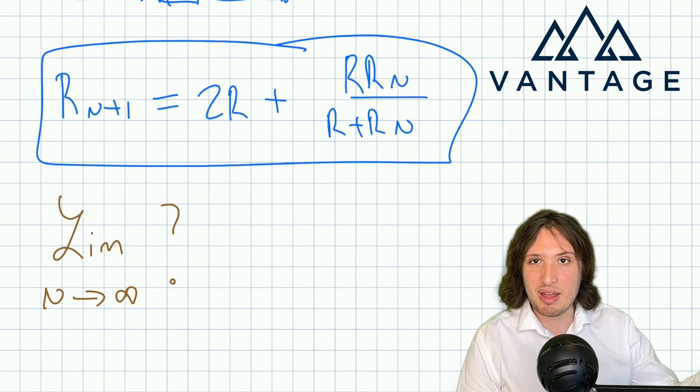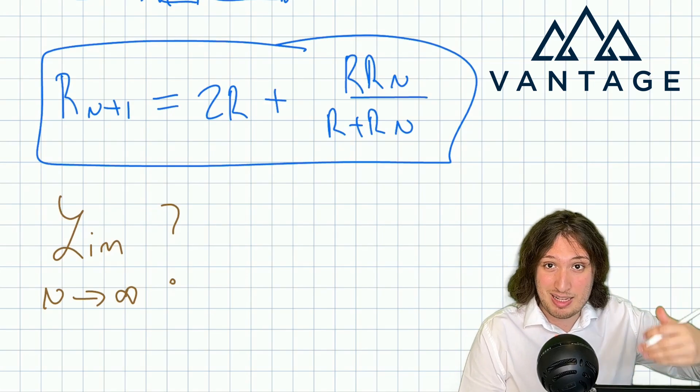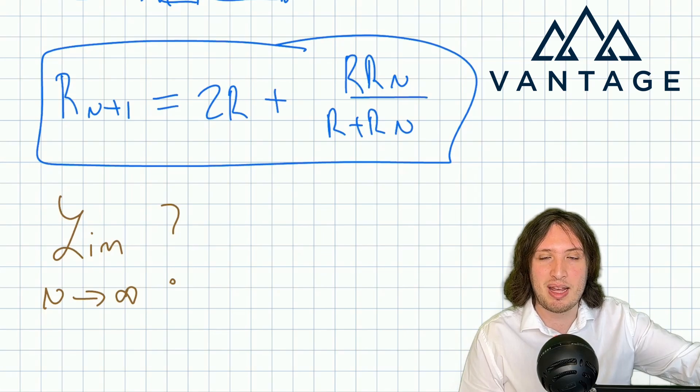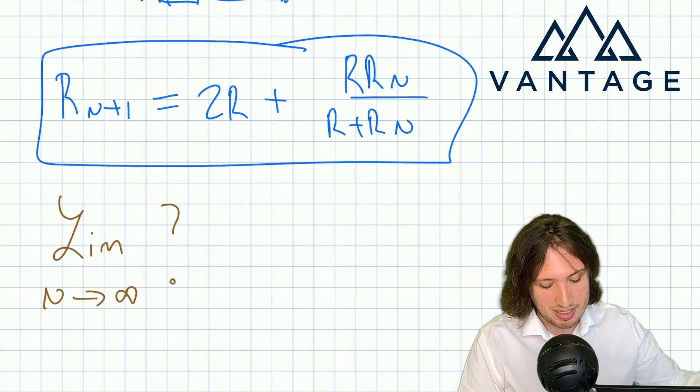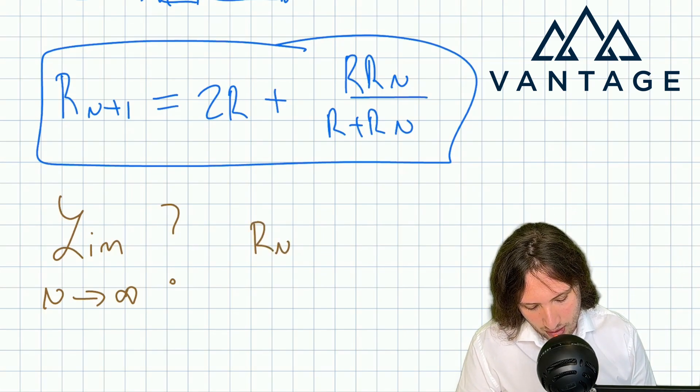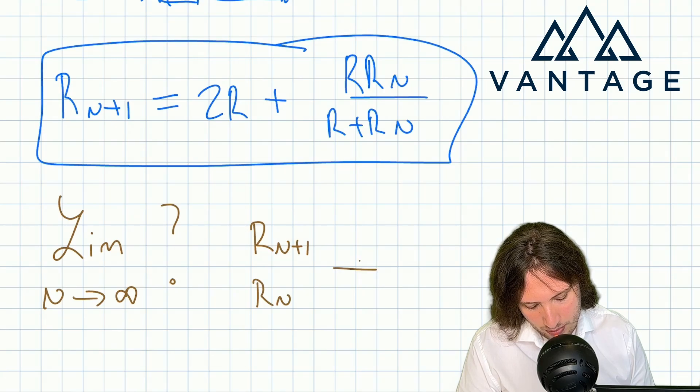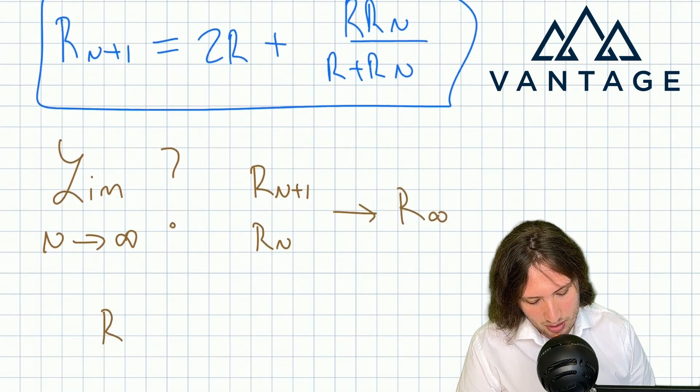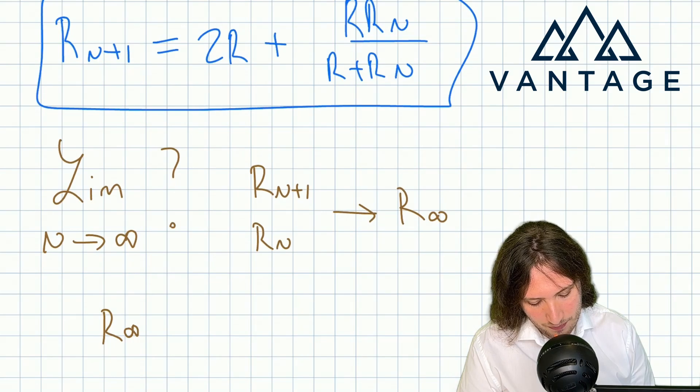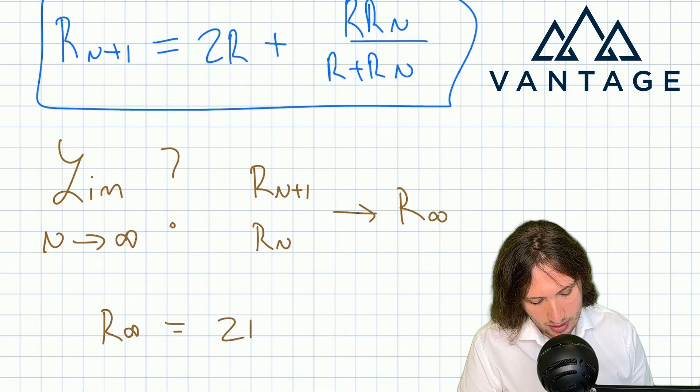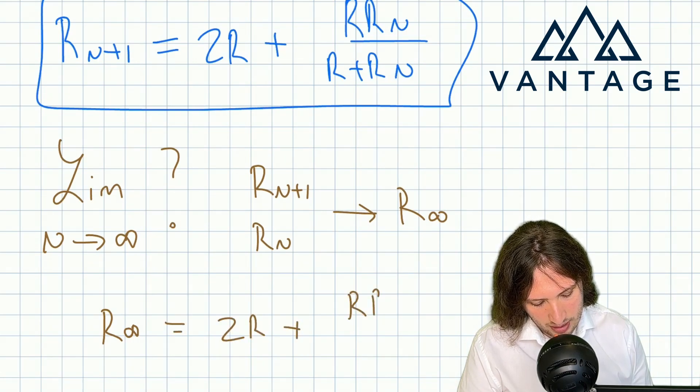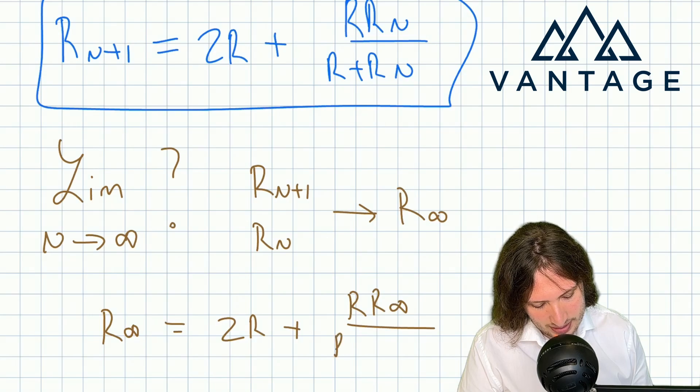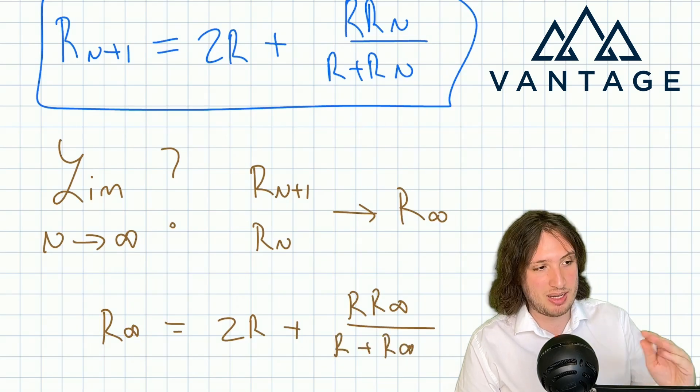Because if I'm already at something infinitely large and I've settled to a limit, whether I add another 1 to my index makes no difference. So Rn+1 and Rn are both going to tend to this kind of infinite limit case. So that gives me an equation: the resistance of the infinite case must be 2R plus R times the resistance of the infinite case over R plus the resistance of the infinite case. Now we've got the problem on the run because I can solve this equation for R infinity.